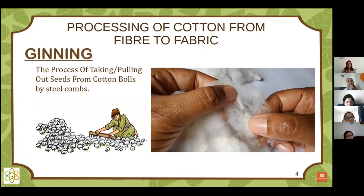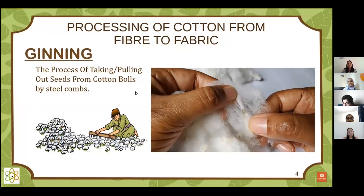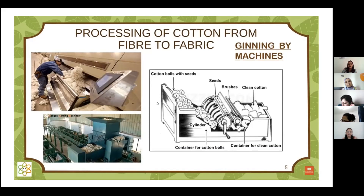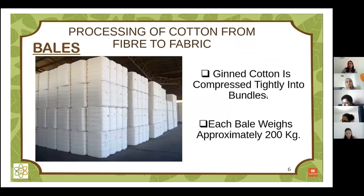Now let's see the process of making fabric from cotton. The first process is ginning — the process of taking out seeds from cotton bolls. You can do it manually by hand, but it is a long process so we use machines. We put cotton bolls into the machine, seeds are separated, and clean cotton comes out with the help of brushes. These are called ginning machines.